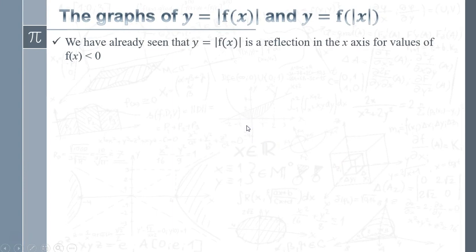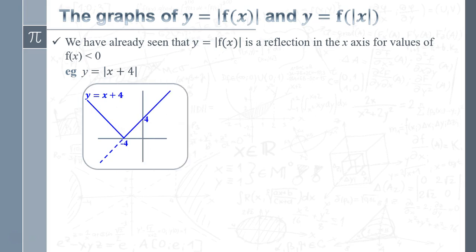So let's have a look at what's going on. We already know that this one here, the modulus of the function is a reflection in the x axis. So if I've got y equals the mod of x plus four, all I do is draw my original line, the bits that are below the x axis reflect it upwards.